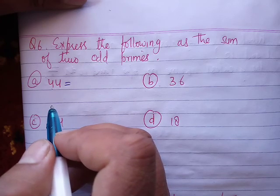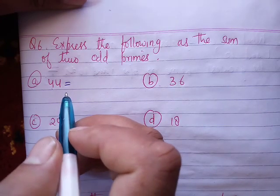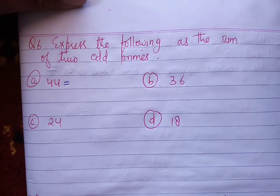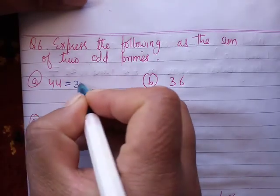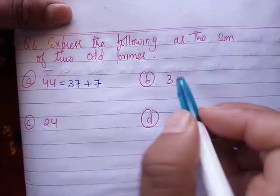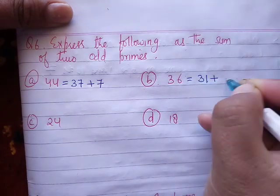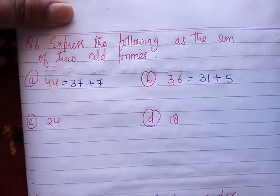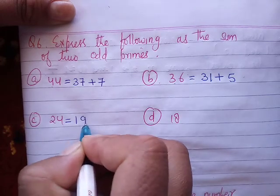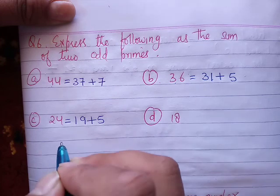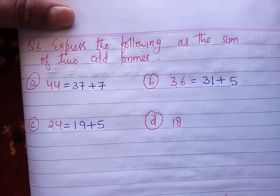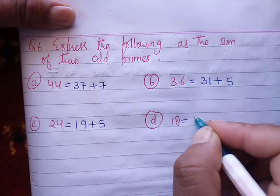For part B, 36: 19 is a prime number and 5 is also prime. So 19 plus 5 equals 24. Wait, that's not right. For 24, it's 19 plus 5. For 18, we use 11 and 7, so 11 plus 7 equals 18.